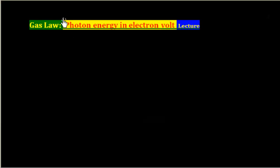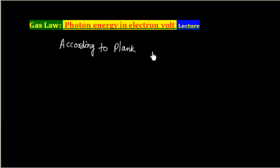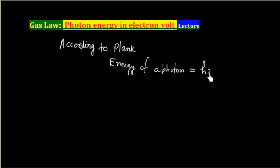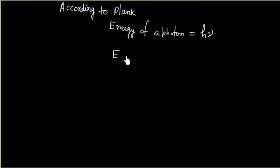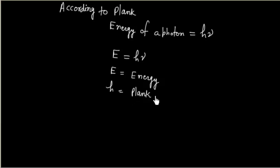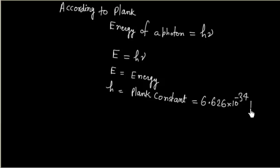In this lecture we will discuss the energy of a photon in electron volt. According to Planck, the energy of a photon is given by the formula E = hν, where E is the energy and h is the Planck constant, with a value of 6.626 × 10⁻³⁴ joule·second.